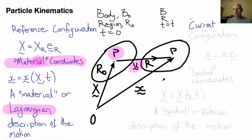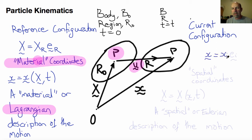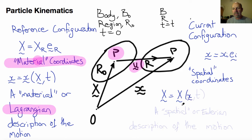The other way to consider the motion is to consider the coordinates in the current configuration. The coordinates little x, with components little x_i in the same reference frame, are called the spatial coordinates. And if we were instead to write the equations for the motion as big X as a function of little x and t, then we would call this a spatial or Eulerian description of the motion.